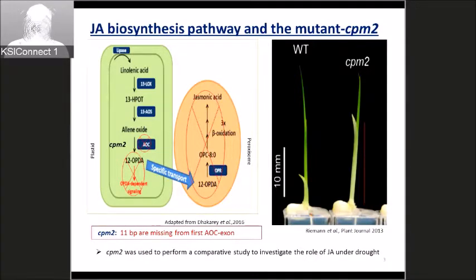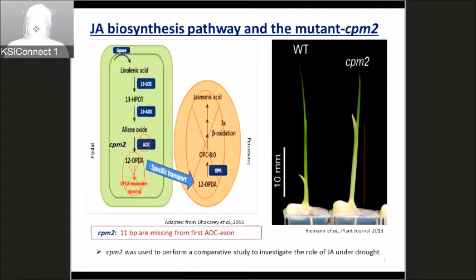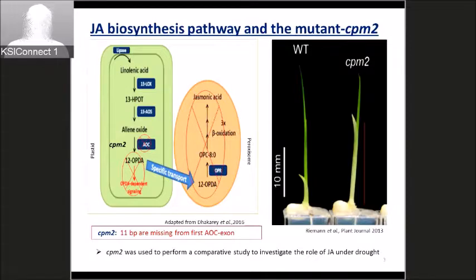To isolate this mutant we have a very simple assay: when we grow the mutant under white light it shows a longer coleoptile phenotype as compared to the wild type, which has a shorter coleoptile.